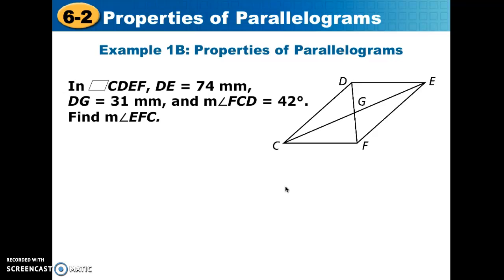The next thing that we want to do with the same parallelogram is find angle EFC. So we remember in the properties that we were just reading about that consecutive angles are supplementary, so that means they add up to 180. So what we're going to do is we're going to say the angle that we have, FCD, and the angle that we want, EFC, are going to add up to 180.